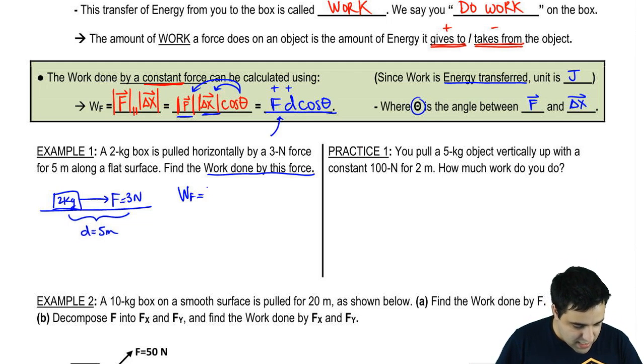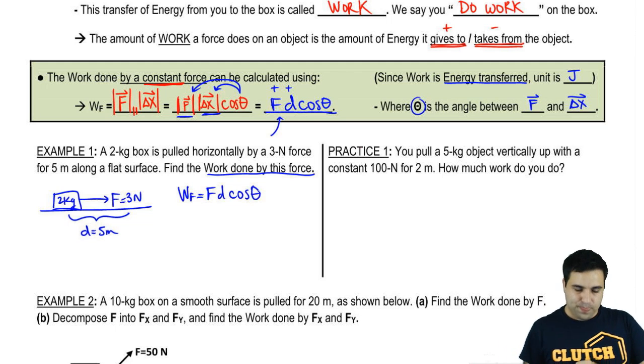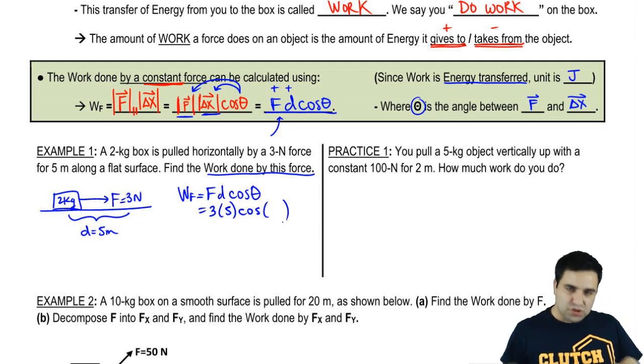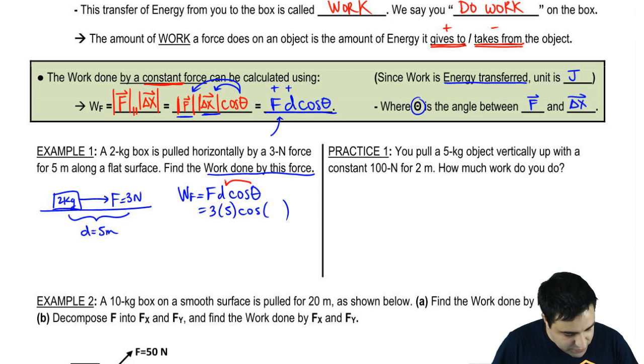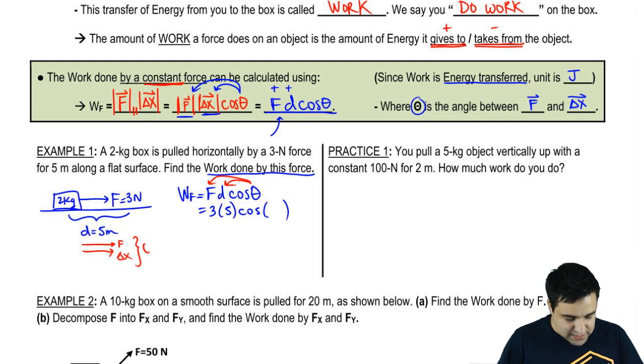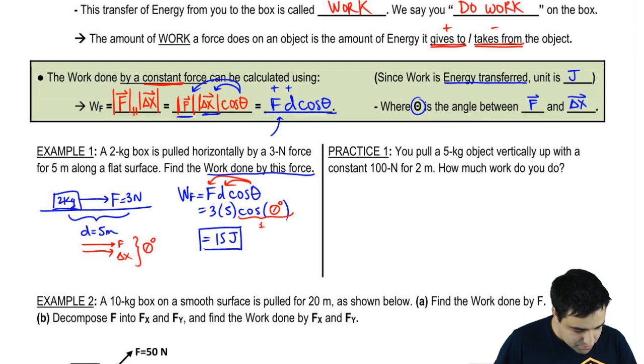F d cosine of theta. Now f and d are pretty straightforward, the force is three, d is five. But every time you get to theta, I need you to slow down and take it easy here and be careful because there's some questions that are going to be tricky. Remember, it's the angle between these two guys. Force is this way, displacement is this way. Notice how they're parallel to each other, they go in the same direction. The angle when two things are parallel to each other is zero degrees. So this is cosine of zero. And the cosine of zero, you plug into the calculator and you see that it's one. So the final answer here is just three times five times one or 15 joules. 15 joules. That's your work.